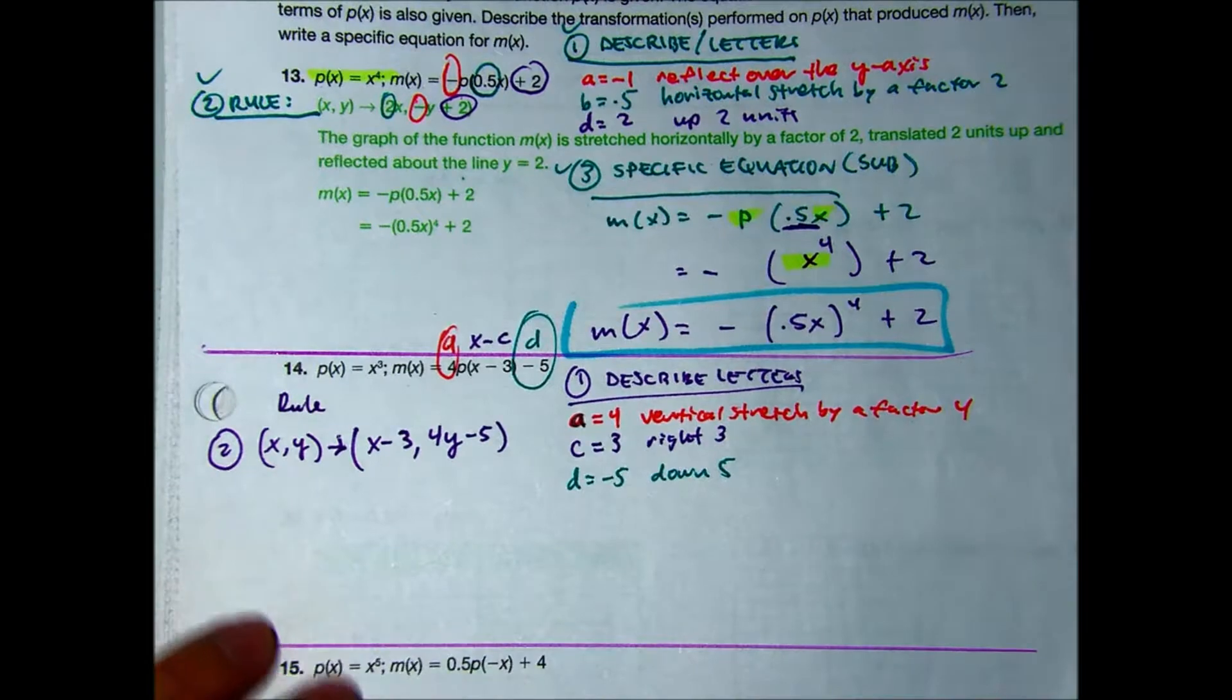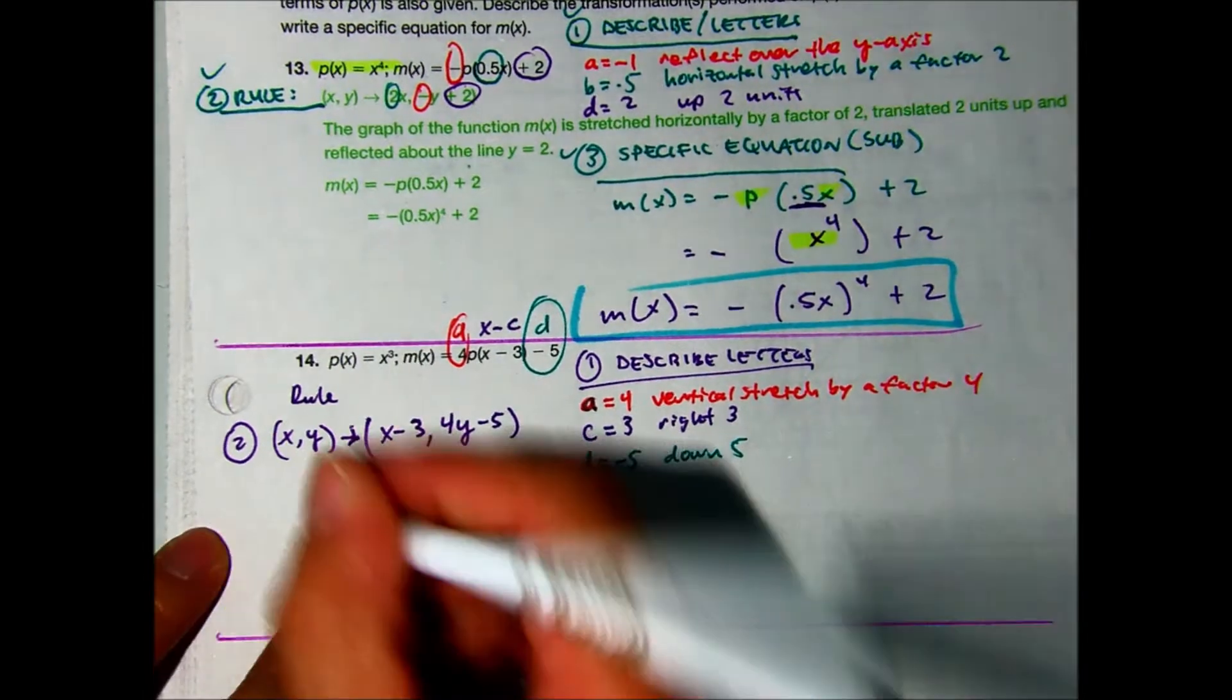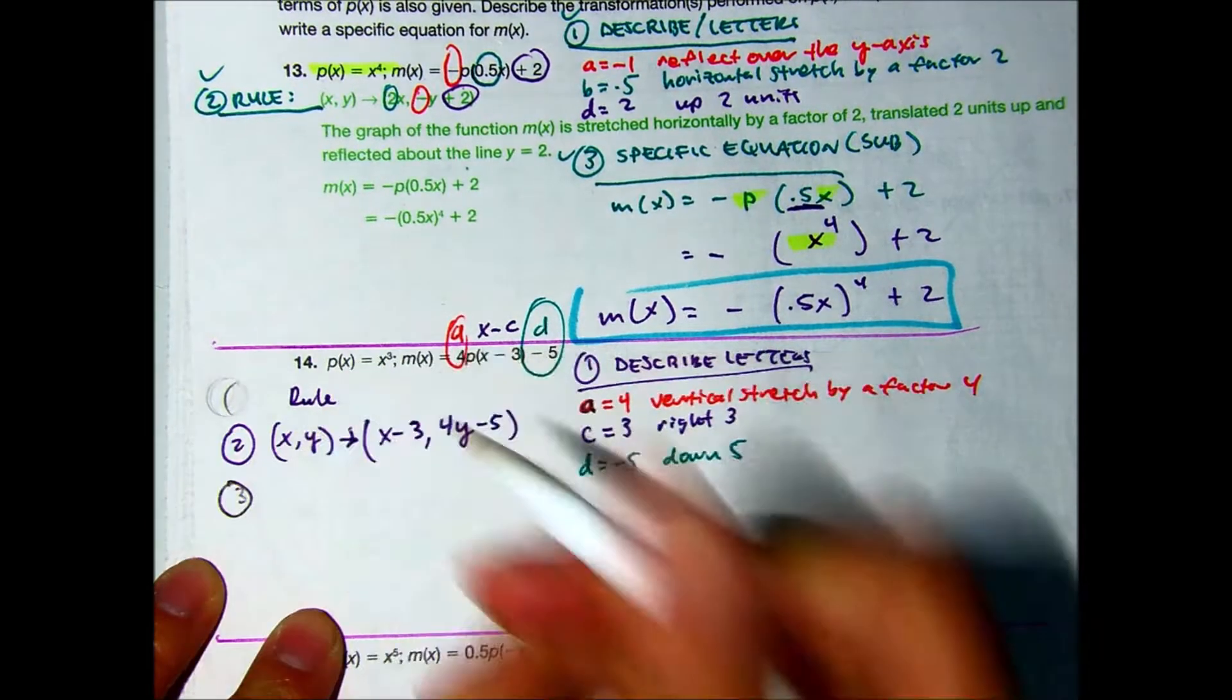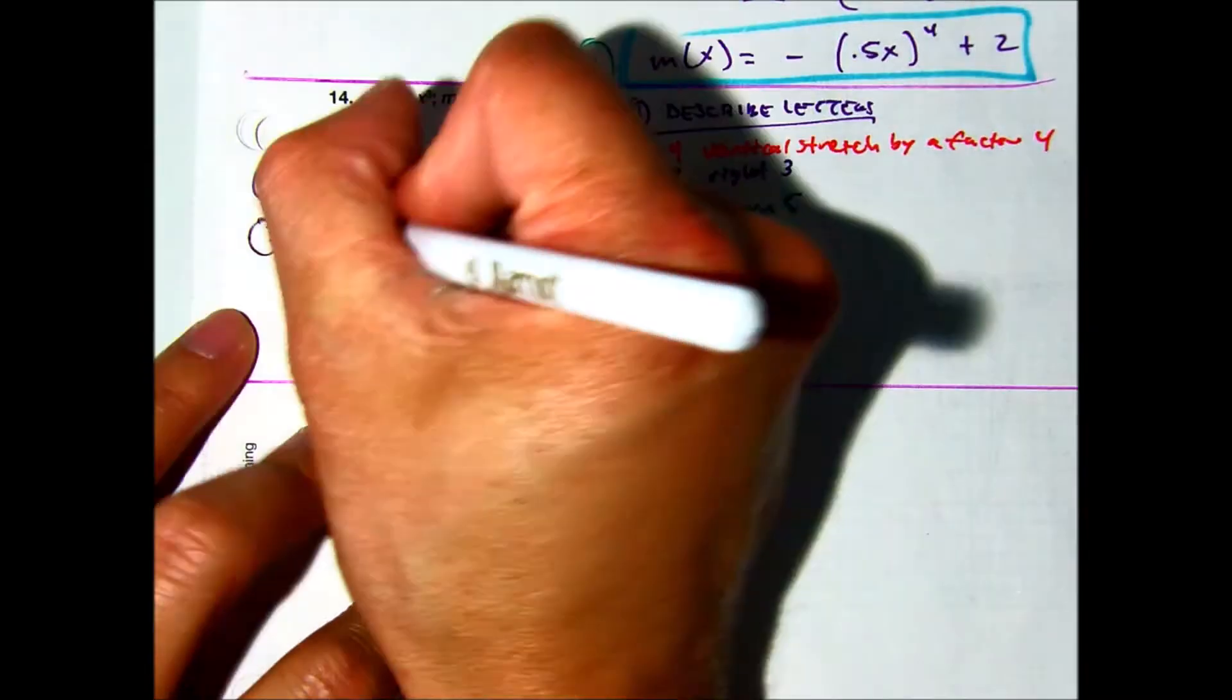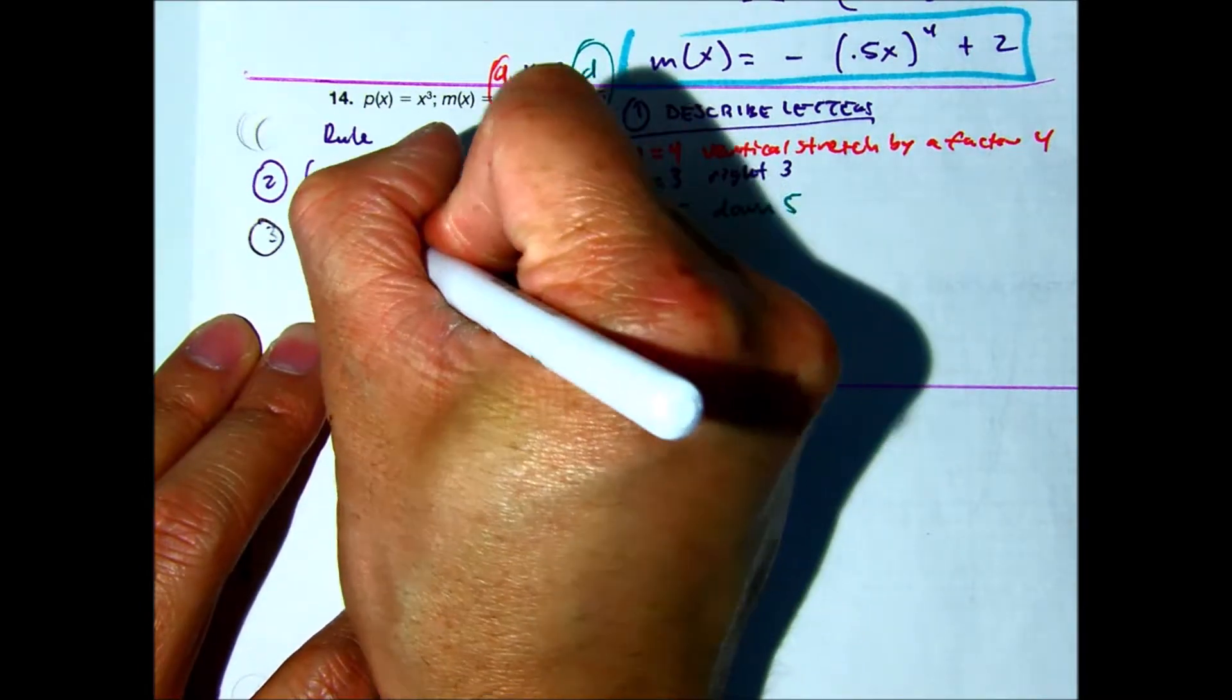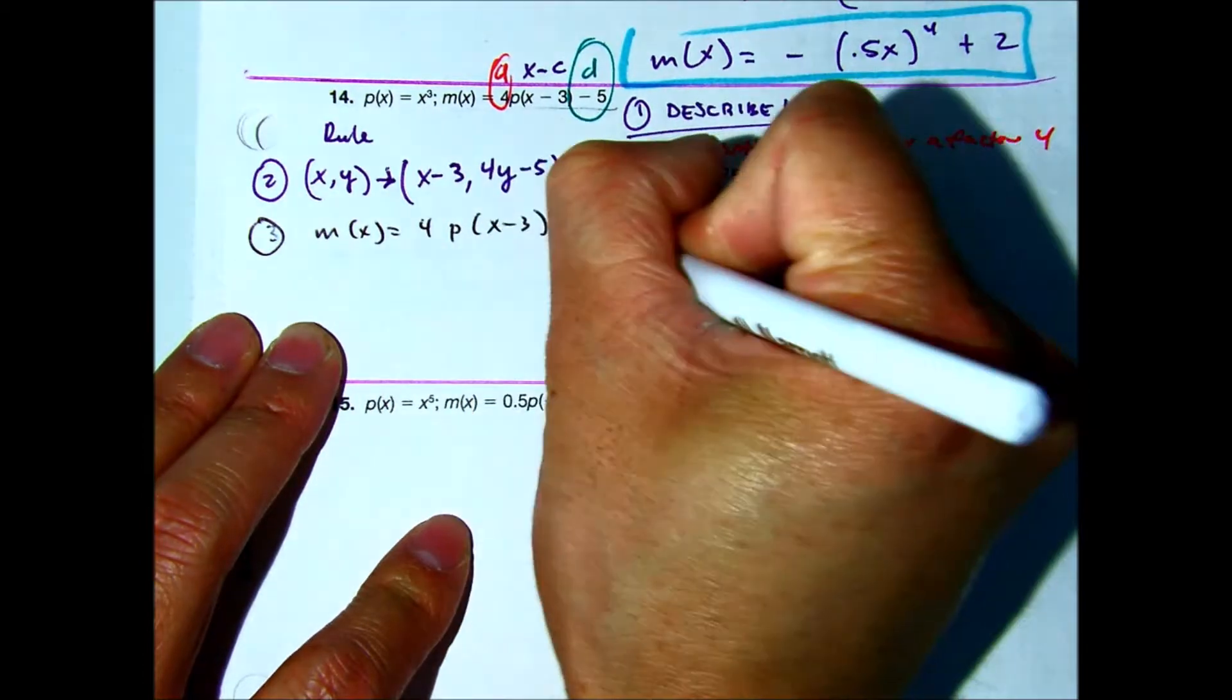Okay. Here's the hard one. The last one says a specific equation. My specific equation is M of X, just copy the second one down, equals four times P of X minus three minus five.